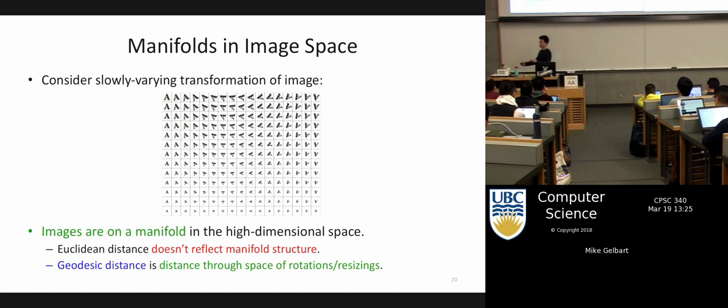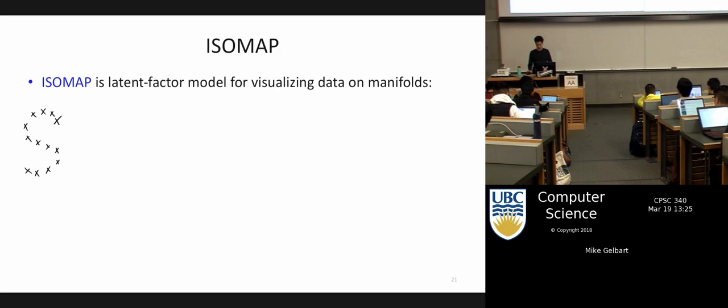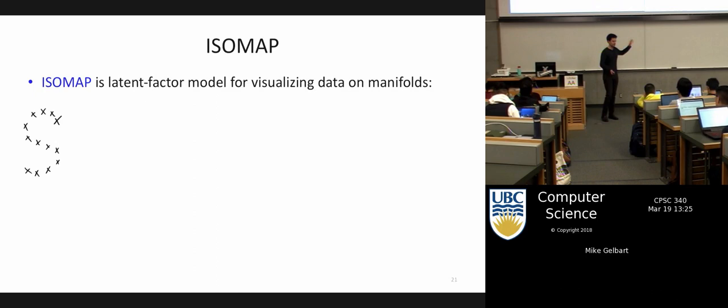Later in the course, in the last part, we'll talk about neural networks where we also try to automatically learn good features, but in a different way. The particular algorithm we're going to talk about is called ISOMAP, and it's also part of assignment five, so you'll be implementing part of this.